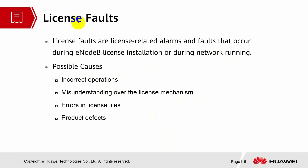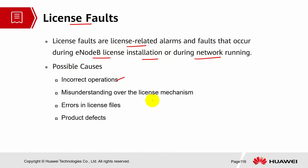License faults — what are the license faults? Basically, license faults are license-related alarms and faults that occur during EOB license installation or while the network is running. The possible causes can be incorrect operations, misunderstanding over the license mechanism, errors in the license file, or product defects.